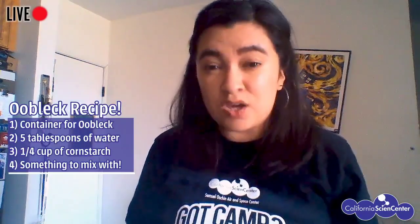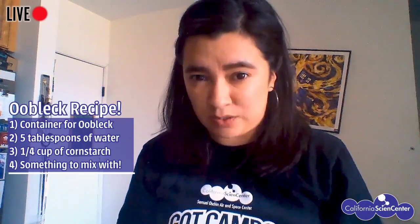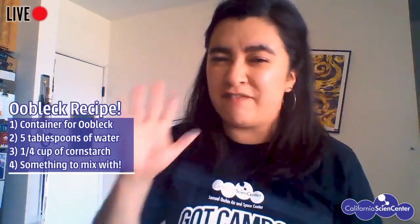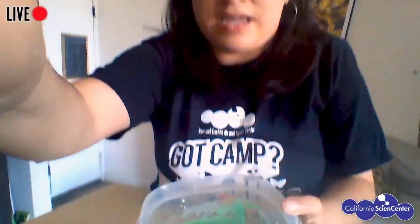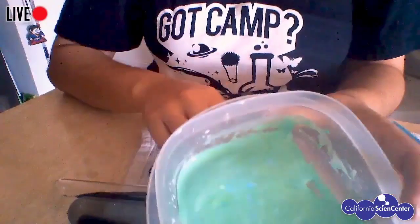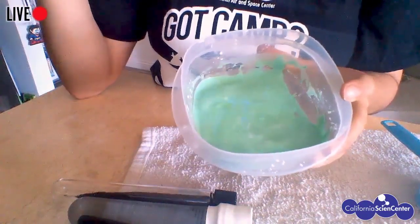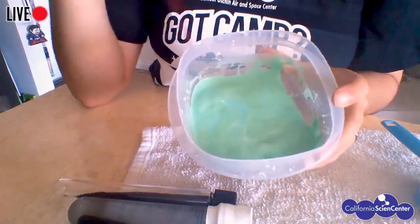How do we make oobleck at home? You'll need something to pour it in, like a container. You'll need some cornstarch and some water, and ideally something to mix it. I used about one-fourth of a cup of cornstarch and about five tablespoons of water. I also added some food coloring — you can see it on my fingers. I mixed all of that into a container. Playing with this can get kind of messy, so you can see I have something out to keep that mess under control.